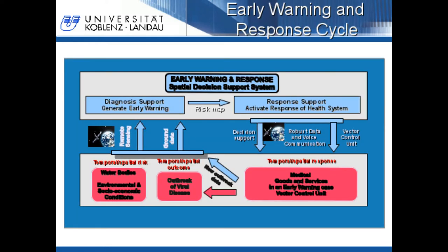On this sheet you can see an example of an early warning and response cycle. The subject of this cycle is a viral disease transmitted by mosquitoes, for example chikungunya. The cycle starts at the lower left with collecting data, then it goes to the upper left where early warning is generated, then to the upper right where response support is delivered, and then to the lower right where the distribution of resources is done. Finally you are at the starting point of the cycle and it starts again with collecting ground data.